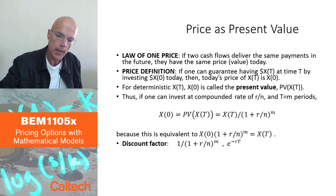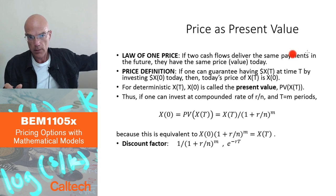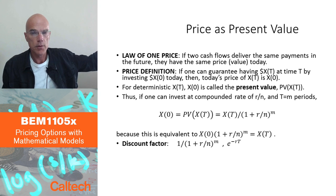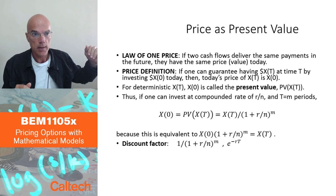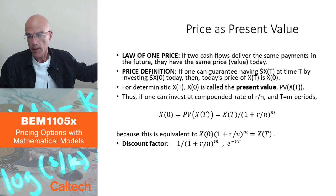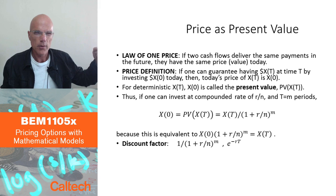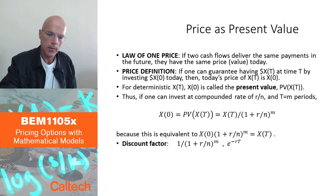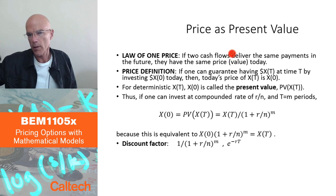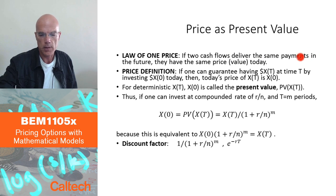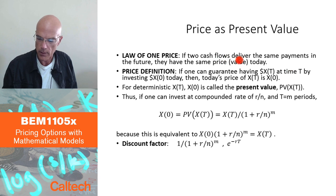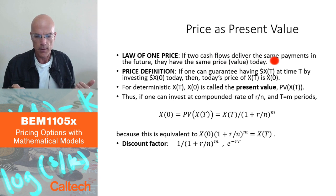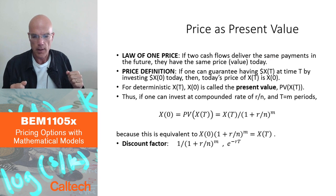The law of one price says: if you can create the same payoff in the future in two different ways, those payoffs must have the same price. No matter which way you create a certain future payoff, as long as it's the same payoff, it must have the same price. This is logical — otherwise you could sell the more expensive one and buy the cheaper one to make arbitrage.